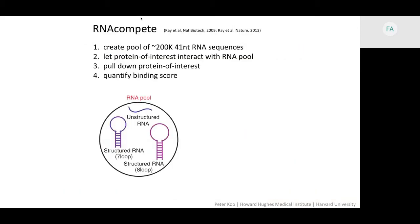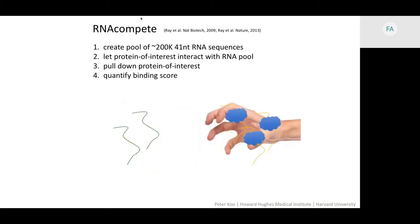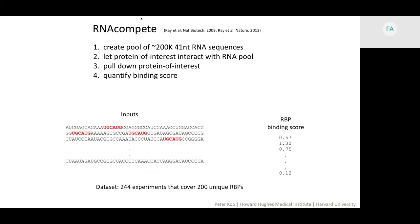We could study the binding properties of RBPs with affinity selection experiments with things like ClipSeq, and we can do it also in vitro with assays like RNA-Compete. The basic idea of RNA-Compete is we're going to start with a diverse pool of short RNA sequences, let it interact with the protein of interest, do a pull-down of that protein, and then we can count the number of RNAs that are bound versus not bound, and this provides us with a quantitative binding score for each sequence.